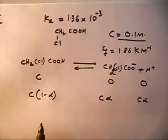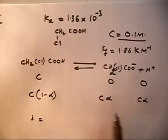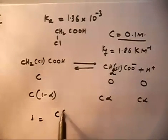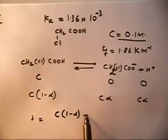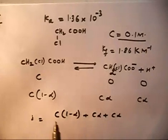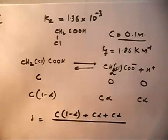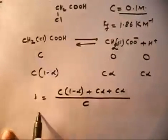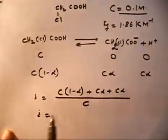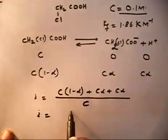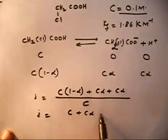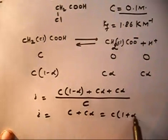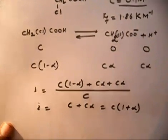The van't Hoff i value is the number of ions at equilibrium divided by the number initially. At equilibrium we have C(1−α) + Cα + Cα = C(1+α), divided by C. So i equals 1 + α.